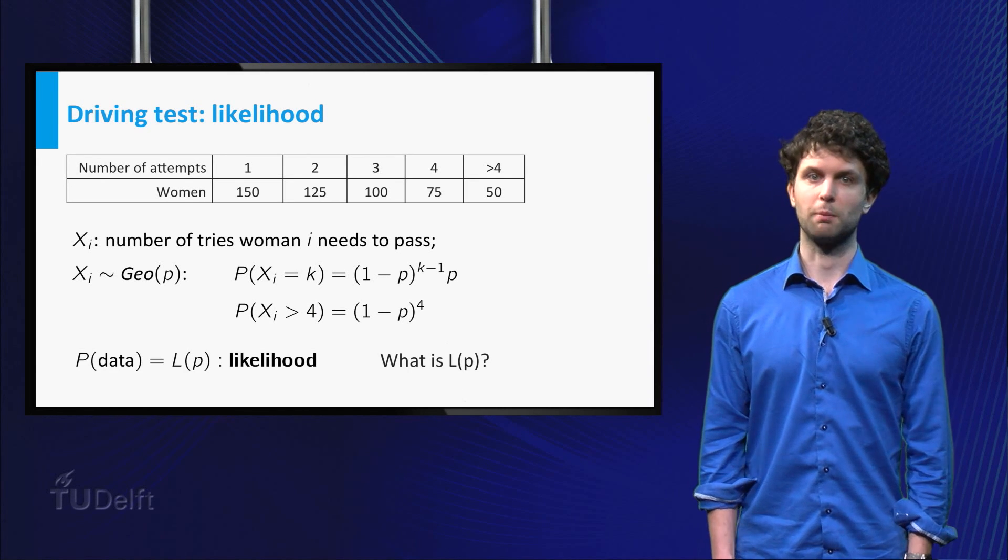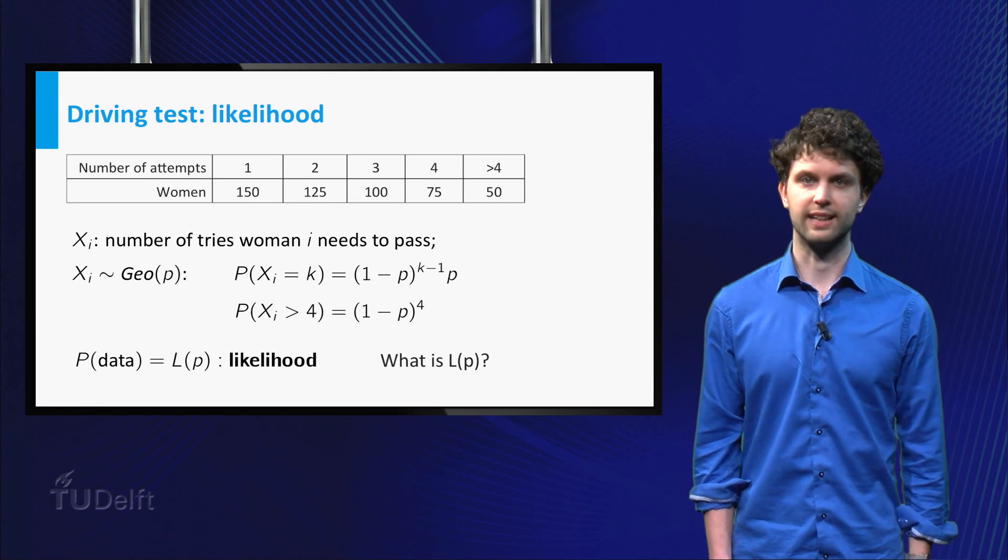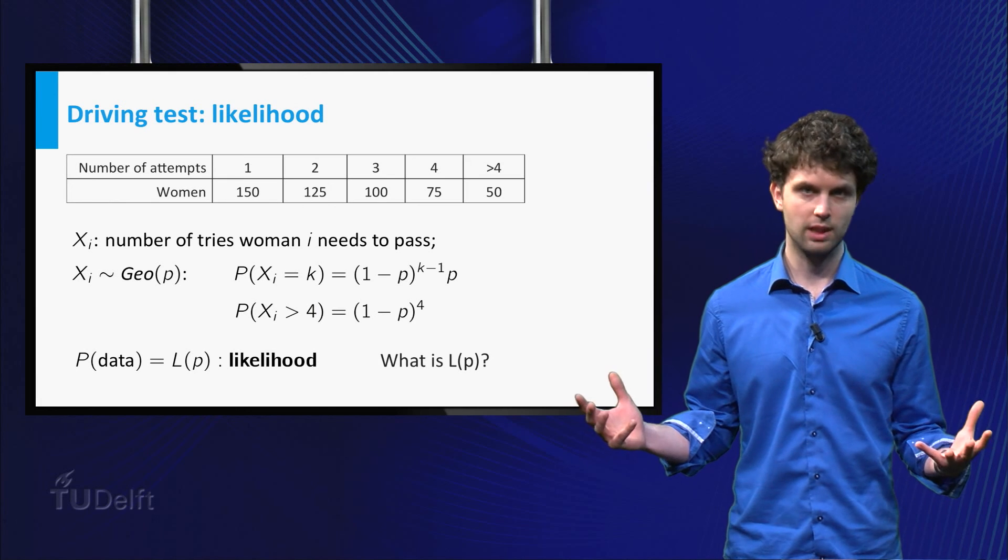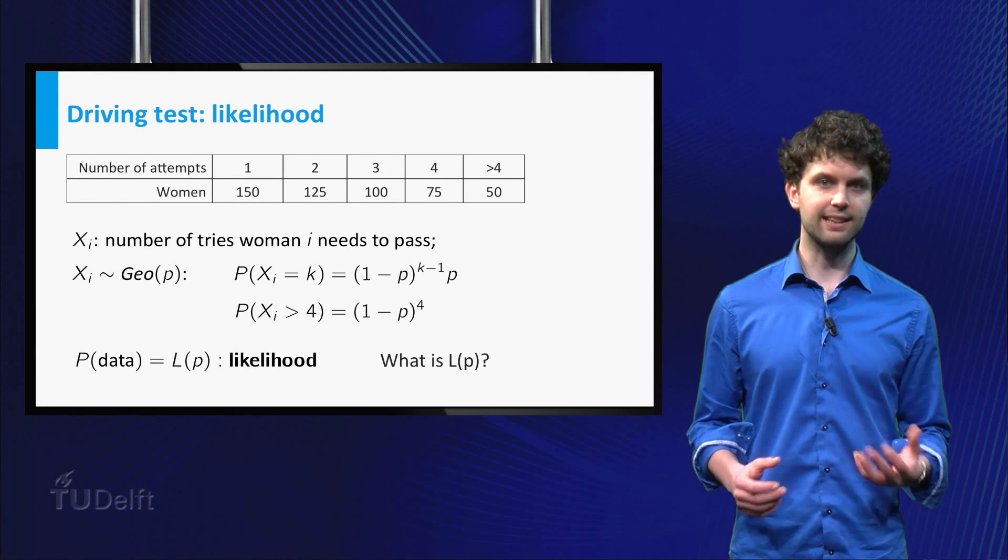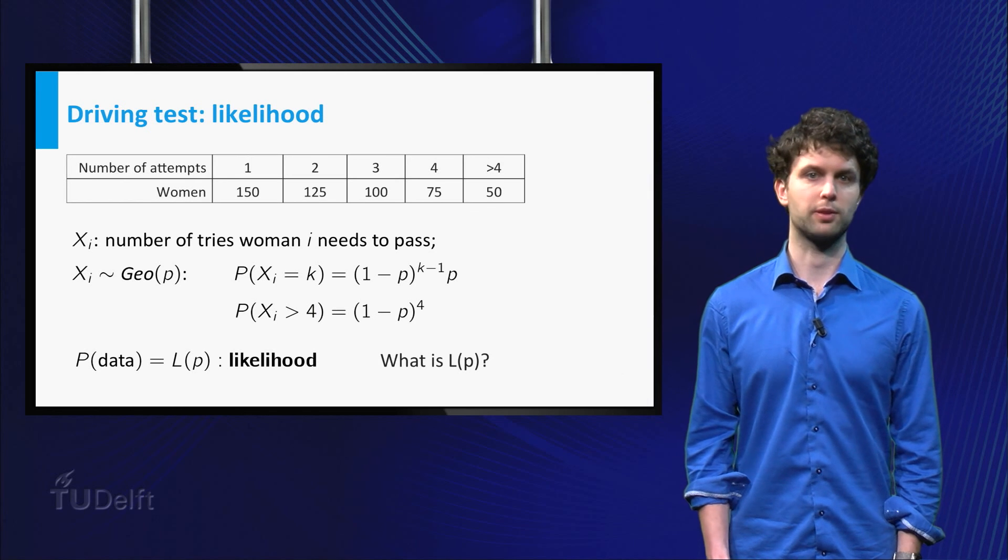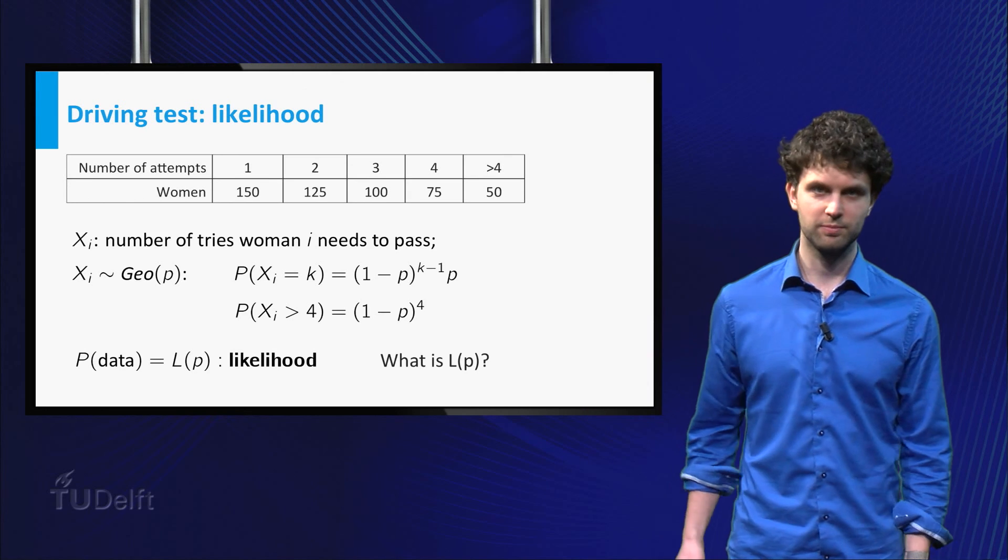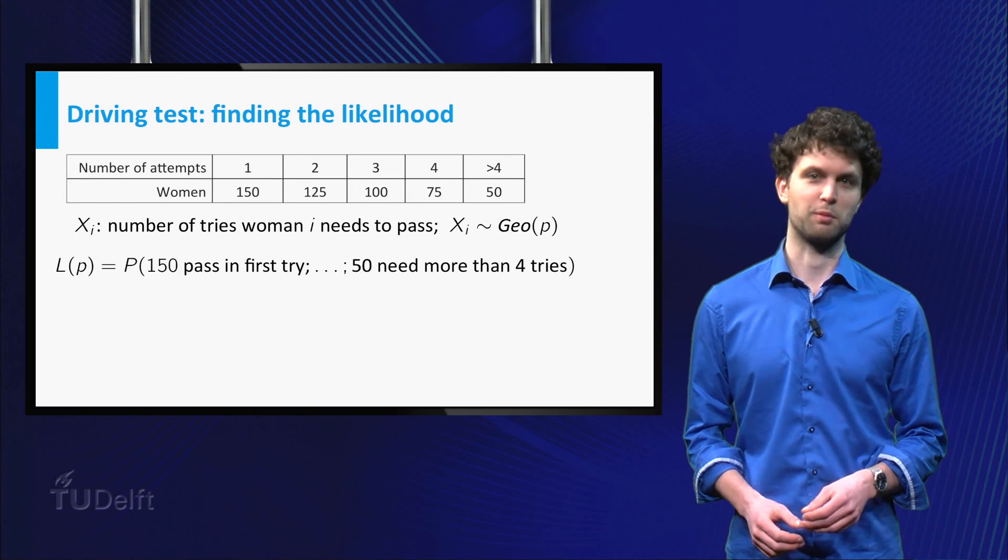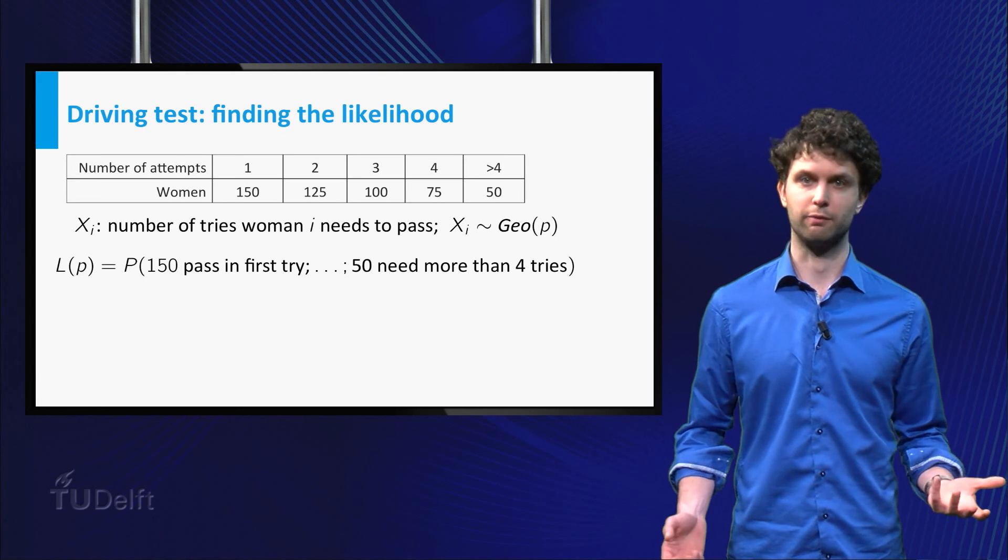In order to apply the maximum likelihood principle, we will have to compute the probability of observing the data as a function of P, and then maximize for P. This function is called the likelihood, that is why we use capital L to denote it. Let's find this function L of P.